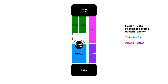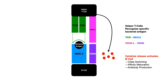Your helper T cells recognize the specific bacterial antigen, and once that happens you have the release of cytokines which activate the B cell. The B cell can then undergo class switching, affinity maturation, and antibody production. Big picture: if you have viral antigen, MHC1 presents that to a cytotoxic T cell which becomes activated after co-stimulation. If you have bacterial antigen, MHC2 presents that to helper T cells after co-stimulation, which causes cytokine release, class switching, affinity maturation, and antibody production.